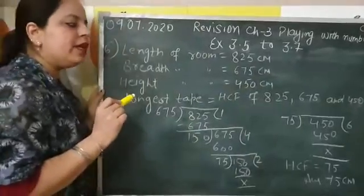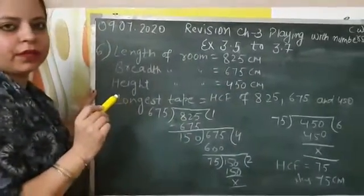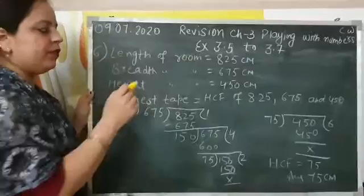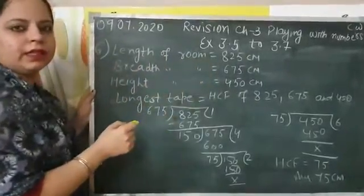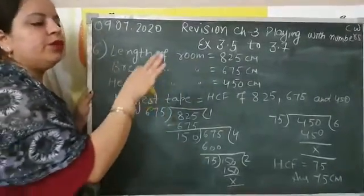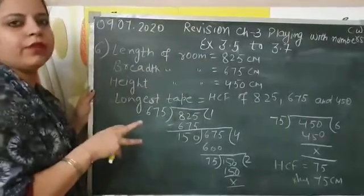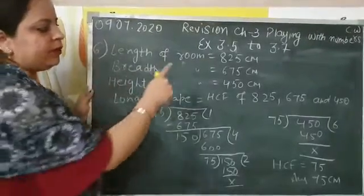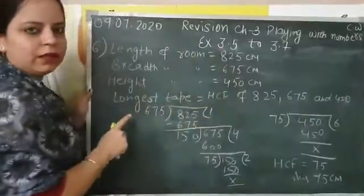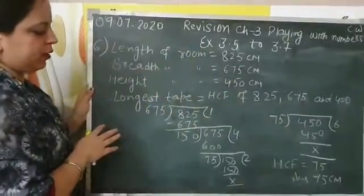Students, you know for HCF we can use the prime factorization method but when largest numbers are given like this, then you can use your division method also. We have two methods for HCF, prime factorization and division. Here you can see values are larger. That's why we will use the division method.